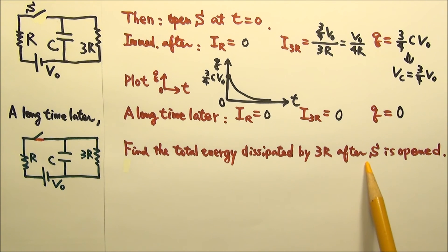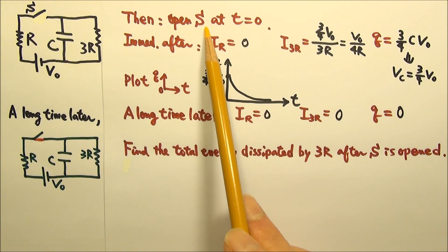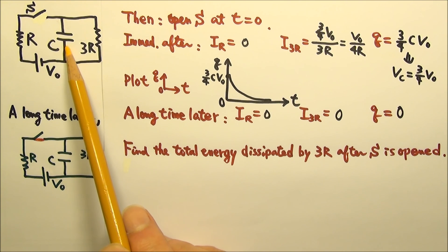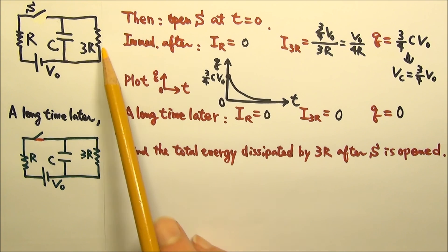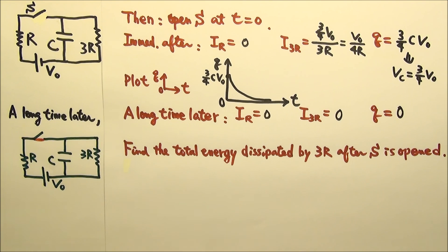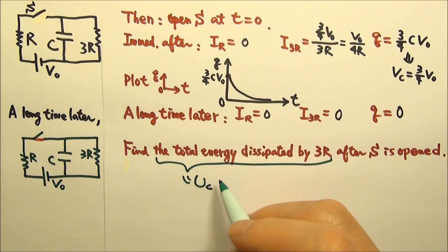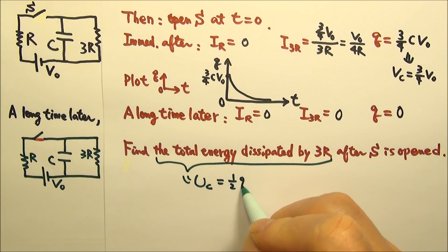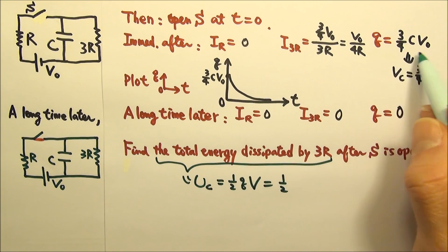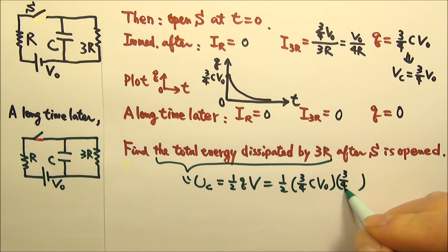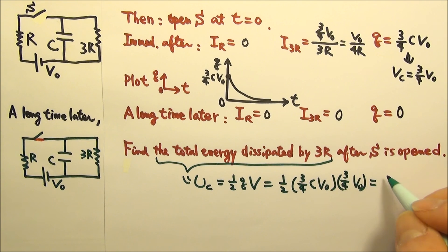As for the energy dissipated by 3R after the switch is opened, we use conservation of energy. After the switch is opened, the capacitor provides energy and 3R consumes it — all the energy stored in the capacitor at t = 0 is dissipated by this resistor. The energy stored in the capacitor is (1/2)QV. At t = 0, the charge is 3/4 × C × V₀ and the voltage is 3/4 × V₀, so the energy dissipated equals 9/32 × C × V₀².